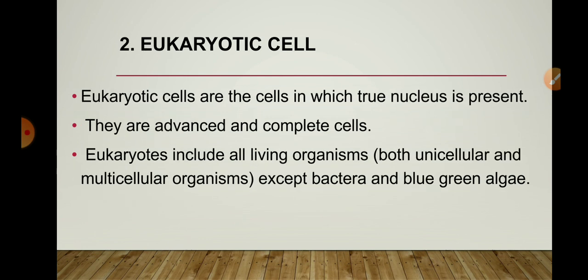Another type of cell is the eukaryotic cell. Eukaryotic cells are cells in which a true nucleus is present — meaning a well-developed nucleus with a nuclear membrane. These are advanced and complete cells. Eukaryotes include all living organisms except bacteria and blue-green algae, including some unicellular organisms and all multicellular organisms. Eukaryotic cells have a nuclear membrane and all organelles are membrane-bound, making them complex and developed compared to prokaryotic cells.